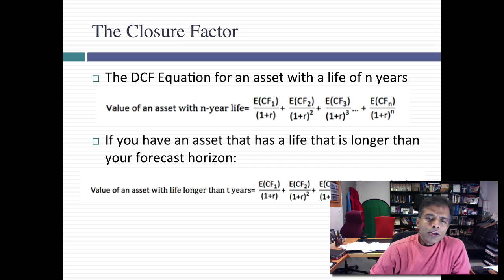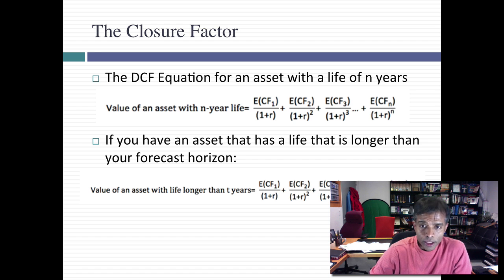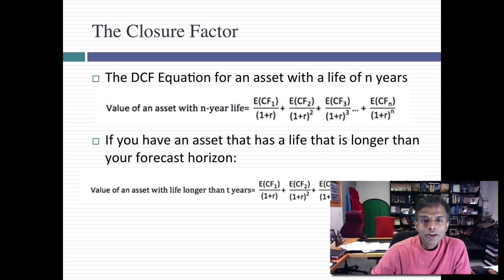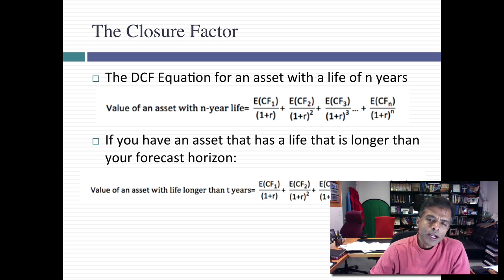So let's go back to basics. The discounted cash flow value for an asset is the present value of the expected cash flows on that asset. So if you have an asset with a life of n years — 5, 10, 15 years — I can get the expected cash flow on each of those years, discount them back at a risk-adjusted discount rate, and what you get is the present value, which is the value of that asset. Simple enough, right?